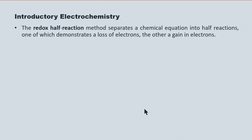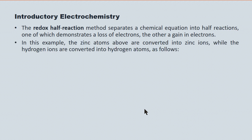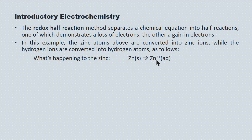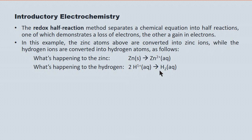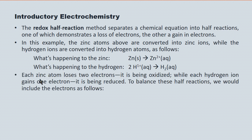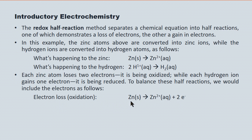Looking at zinc and then hydrogen through the half-reaction method, we get a sense of an electron being lost by one species and gained by another. The zinc atoms are being converted to zinc ions while hydrogen ions are being converted to hydrogen atoms. The zinc is converted to zinc ions by losing two electrons, and the hydrogen ion is converted to hydrogen atoms by gaining one electron per atom. Each zinc atom loses two electrons; each hydrogen ion gains one electron.